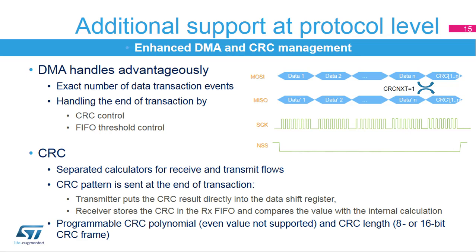During protocol-level communication, the DMA can be used favorably to apply the CRC patterns or change the FIFO threshold setting correctly after an exact number of data is transferred. For threshold control, the last odd data frame is correctly applied in packed mode when the number of frames is not aligned with the packet size. If the CRC is enabled, separated CRC calculators are used for the transmitter and receiver. The result of the CRC calculation is applied at the end of the transfer either automatically by the DMA or by software. Results from the transmitter's CRC calculation register are loaded directly into the shift register, and the received CRC value is stored in the FIFO and compared with the result of the receiver's CRC calculation register. The CRC polynomial used for the calculation is programmable, and the length of the CRC pattern can be set to either 8- or 16-bit frames.